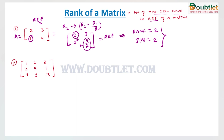Remember: the rank of A is always less than or equal to the number of rows. For example, if a matrix has three rows, the rank should be less than or equal to three. It cannot exceed the number of rows.